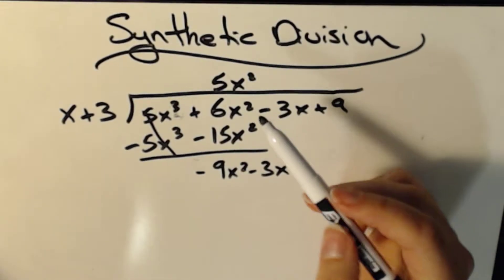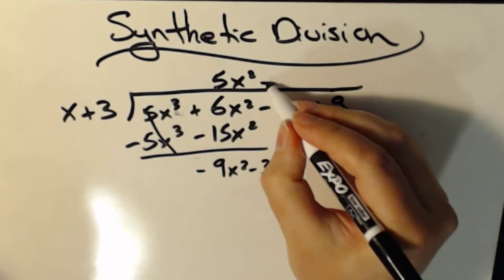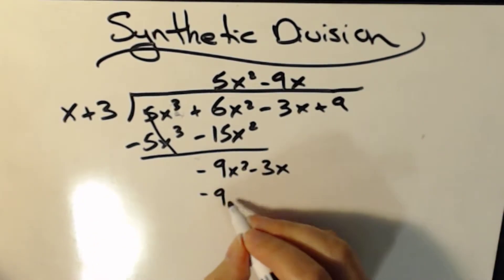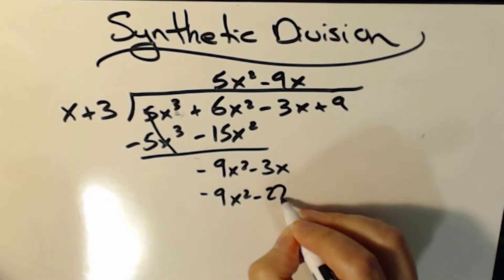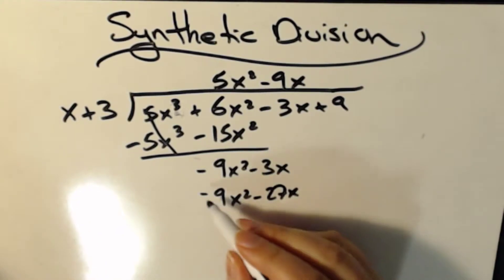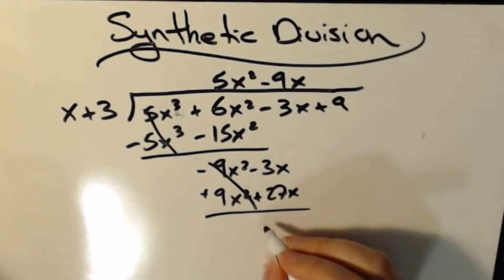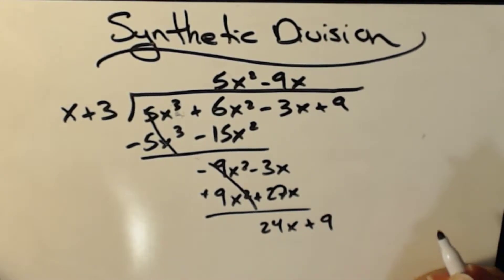So then I'm going to say, okay, what do I need to multiply x by to get negative 9x squared? And that's going to be negative 9x. So then I multiply negative 9x squared.